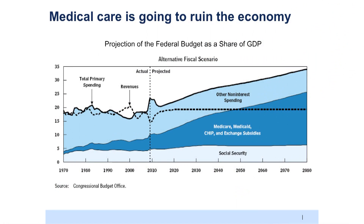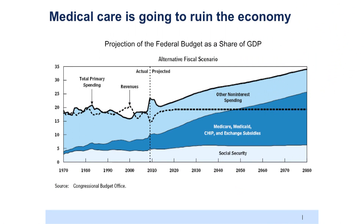Let me start off with where most people are. This is the outlook for the federal budget as a percent of GDP. The dashed line is revenues, assumed to be a constant share of the budget. The white spot at the bottom is Social Security — you can see aging there, more people going on to Social Security as a share of GDP. It's not a huge issue.